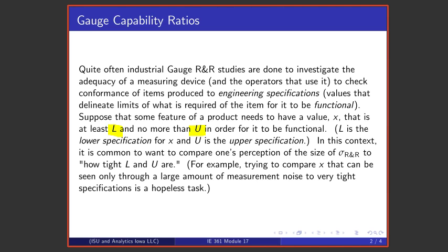In this context, it's common to want to compare the spread between L and U to some measure of how much measurement uncertainty is taking up. The idea is that if measurement uncertainty is the same order of magnitude as that spread, then trying to use that gauge to check conformance to those engineering tolerances or specifications is a hopeless task.